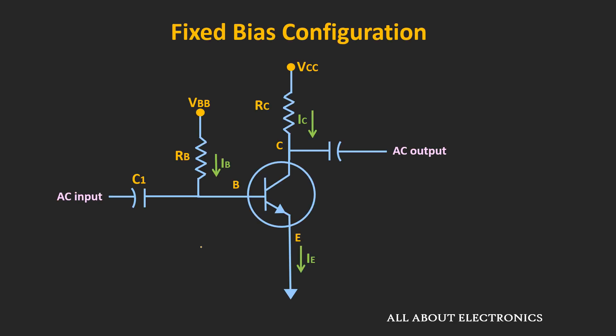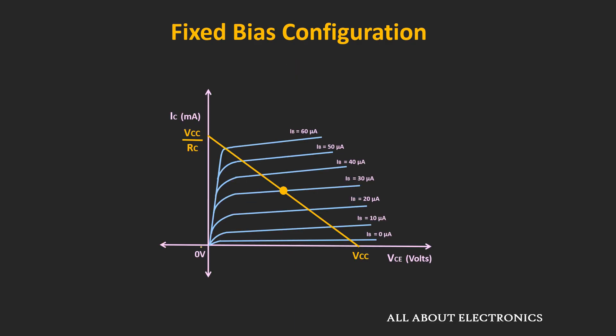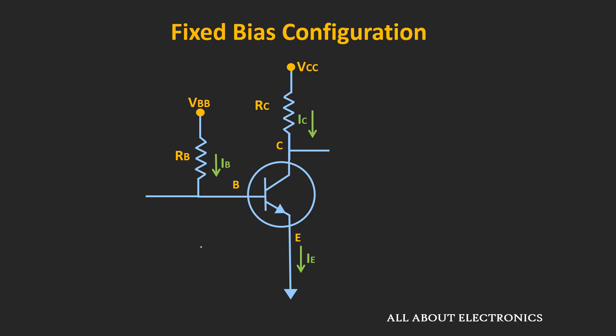Now, if you have followed the previous video on the BJT, then we have already discussed about the fixed bias configuration. And we had seen that with temperature, as the value of β changes, then the operating point also changes. So now, let's see how we can improve the performance of this fixed bias configuration.